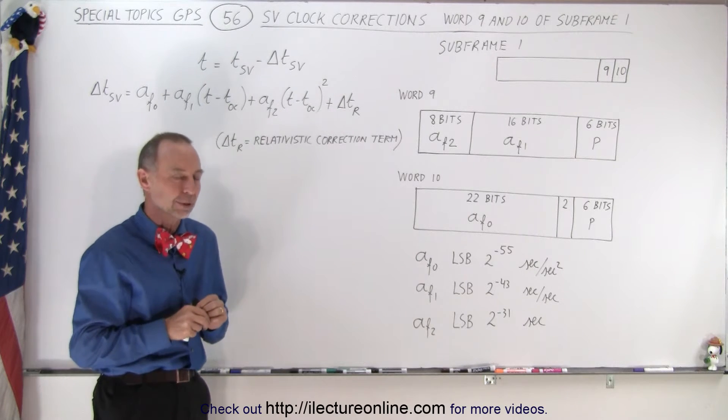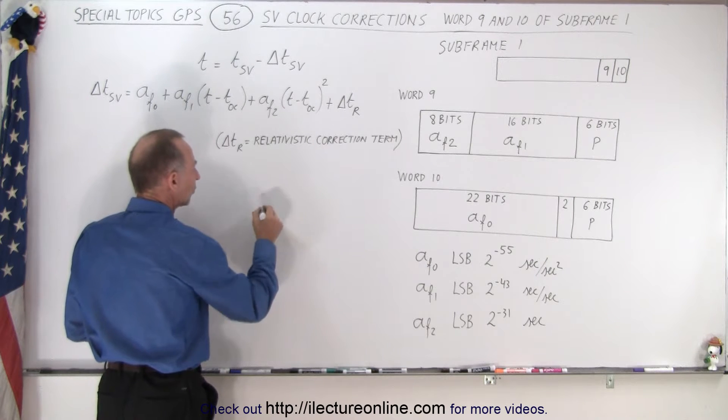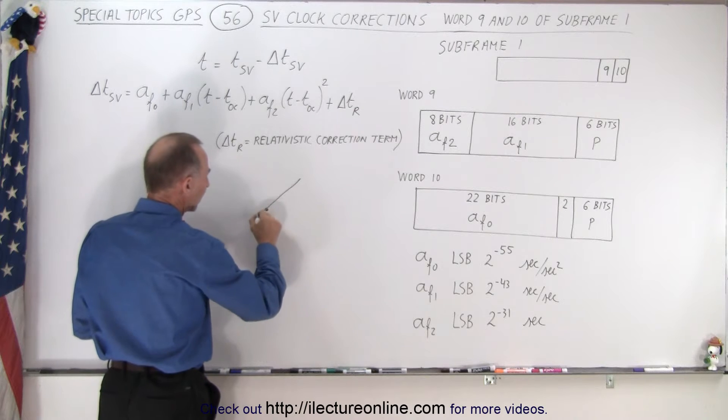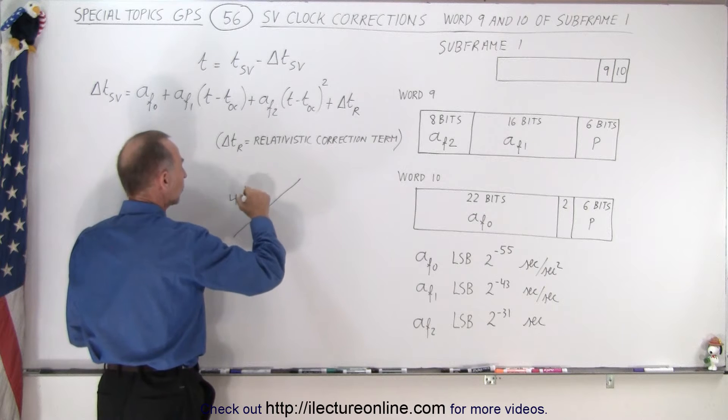And so again what we have here is we're given every so many hours a set of ephemeris parameters. If they didn't change as the satellite moved they would be the same over a period of let's say four hours.